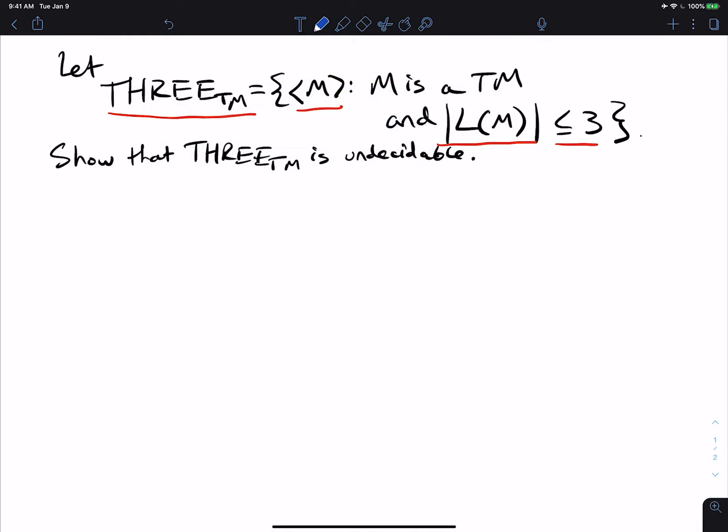So what we want to show here is that 3TM is undecidable, which means that there's no algorithm to decide whether or not a given Turing machine is in 3TM or not.